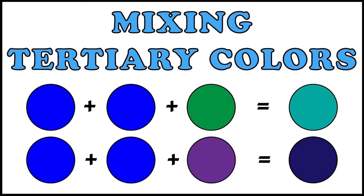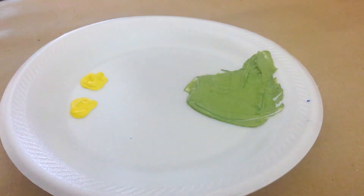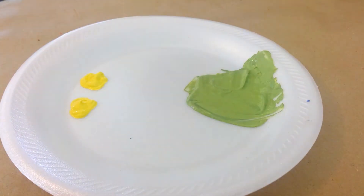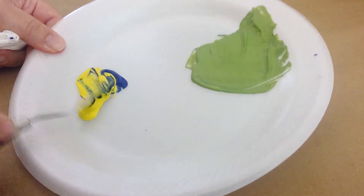Last but not least, we have the tertiary colors that are made using blue. So let's start again with green, which is two equal parts of yellow and one equal part of blue.